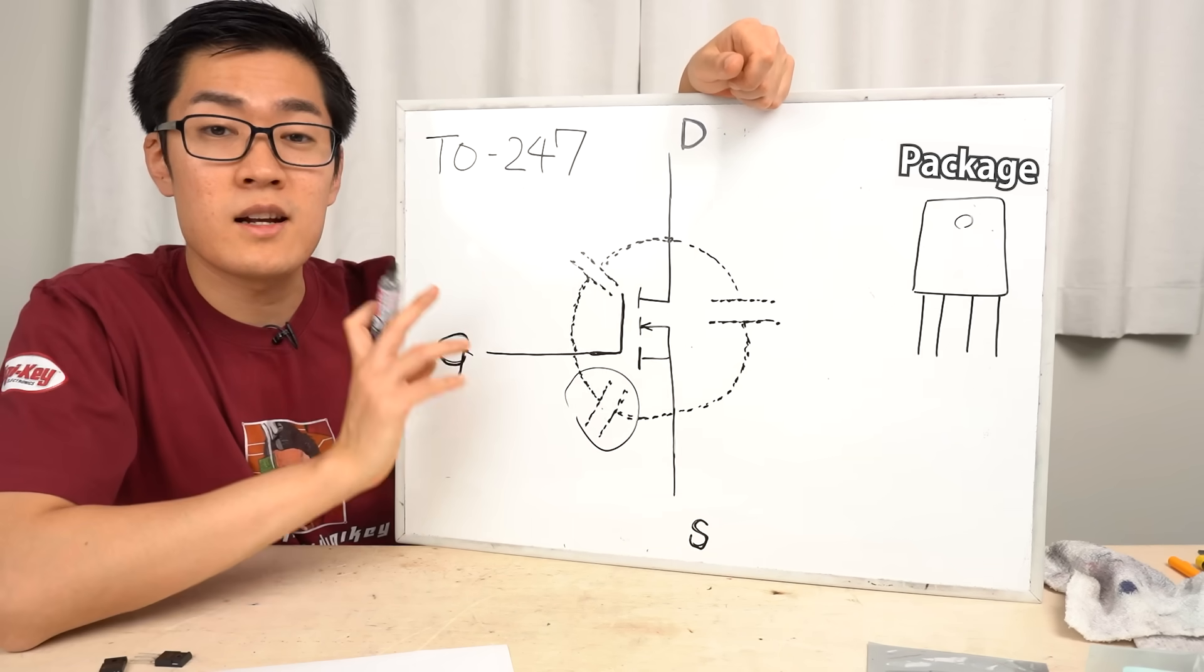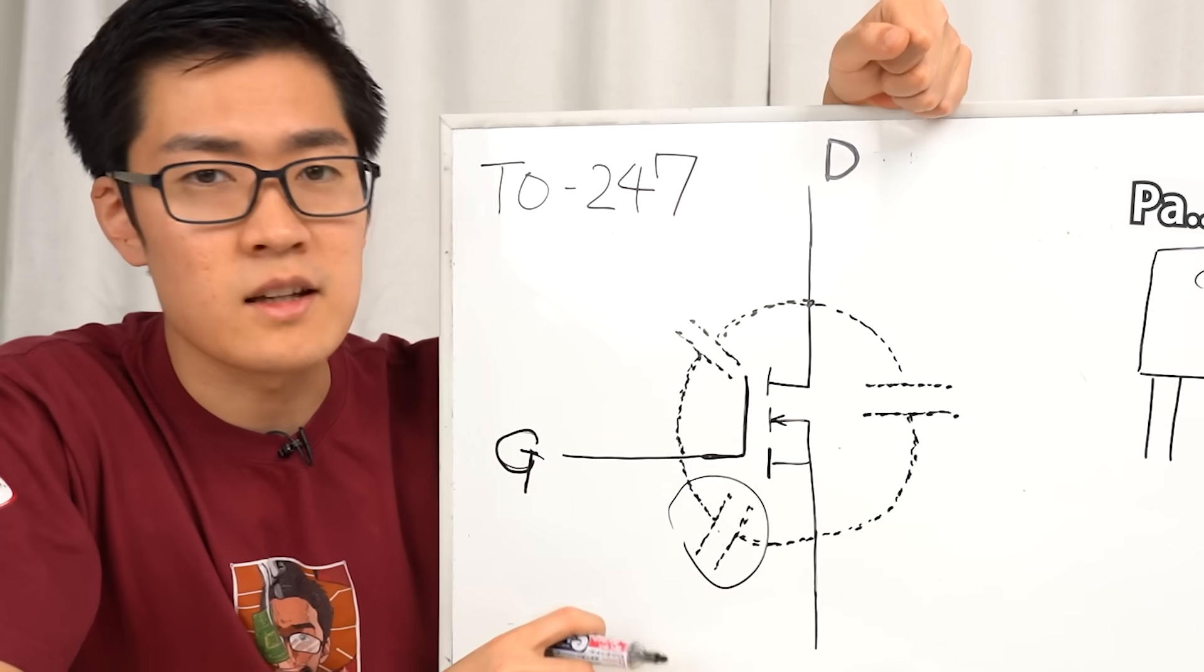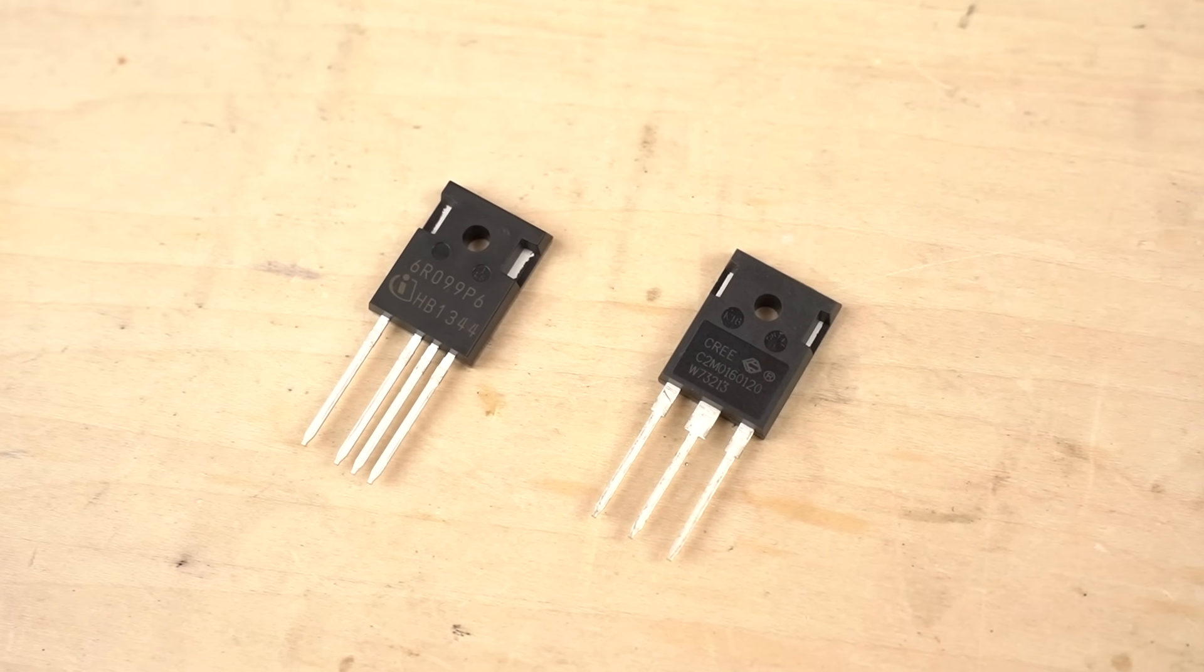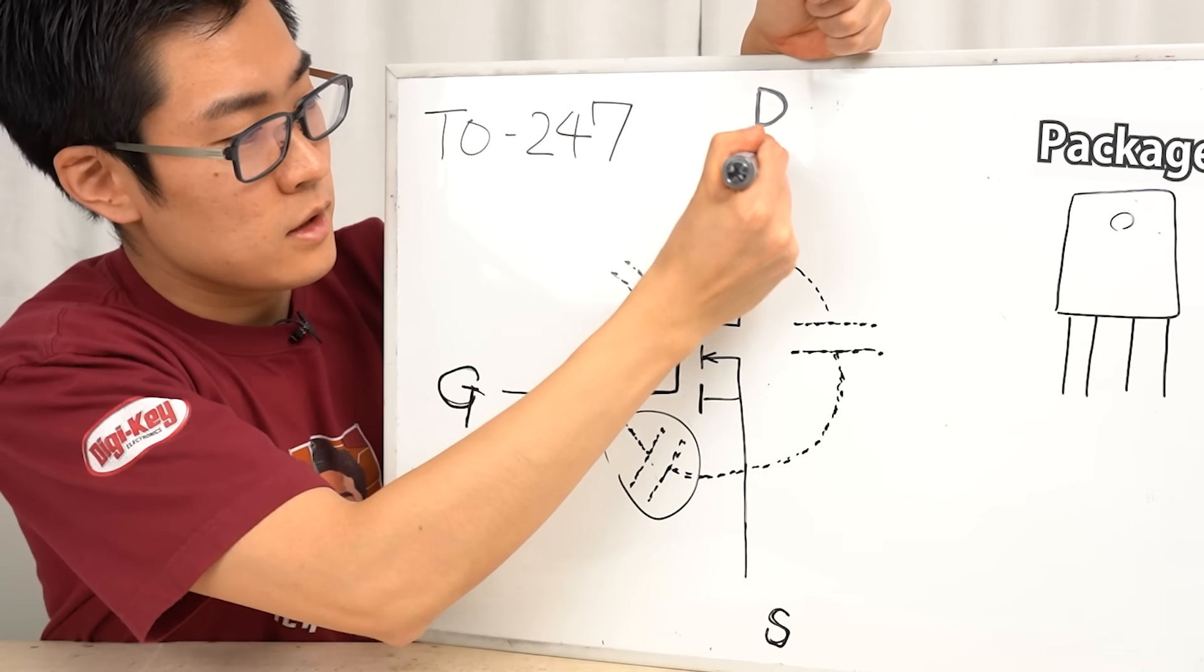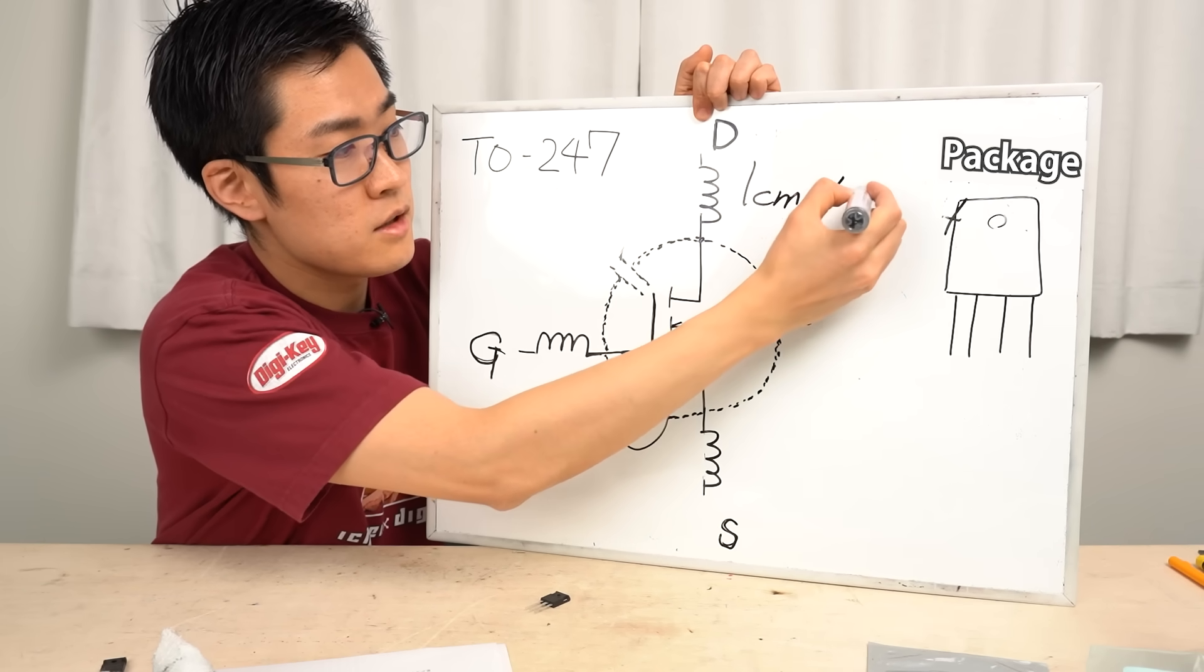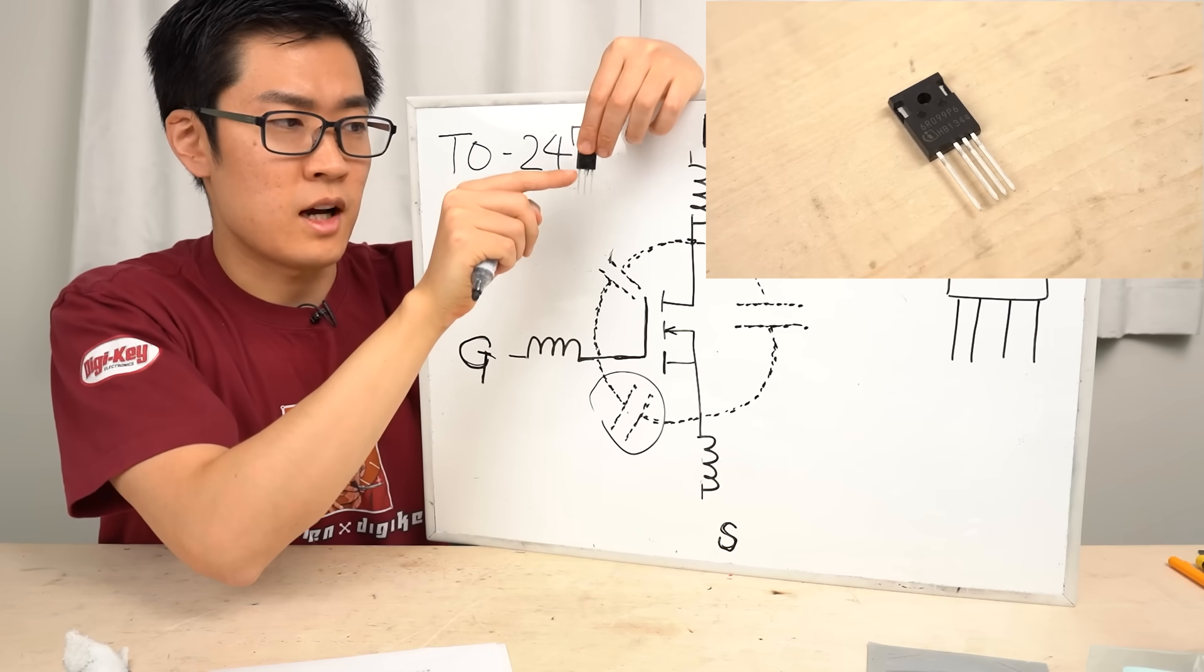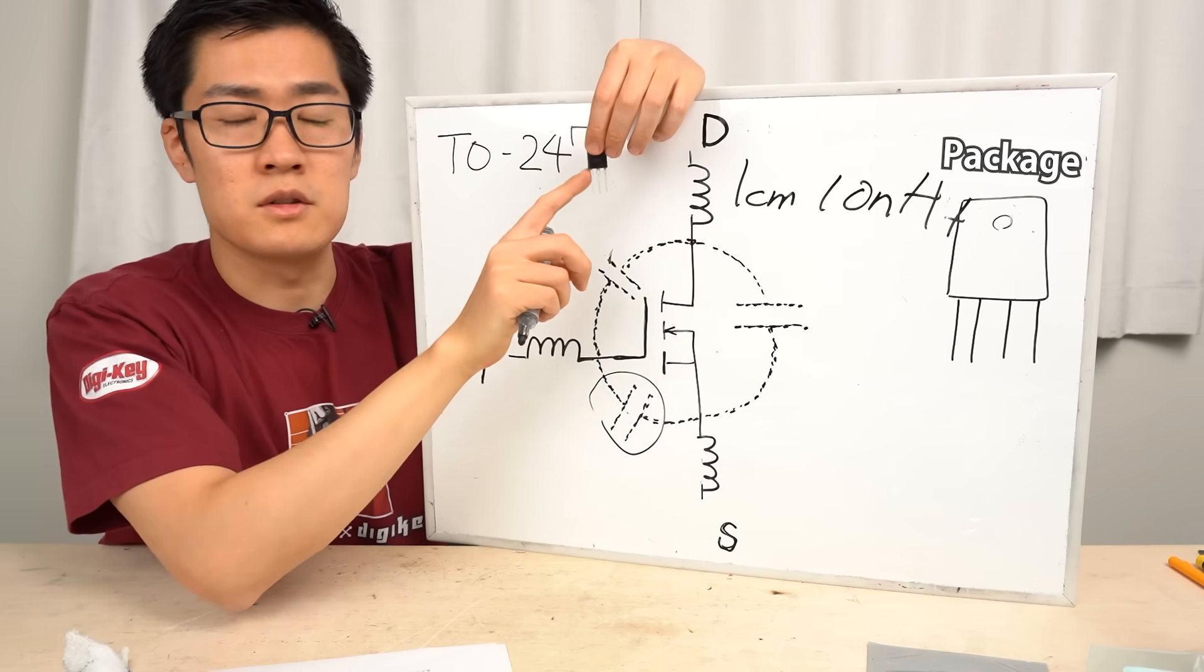In addition to parasitic capacitance, there are other components that need to be considered. One of them is parasitic inductance. As you can see, these packages have leads. The wiring of the leads has some inductance. So in reality, there's inductance in this part as well as at the source lead. There is inductance at the gate lead as well. It is said that one centimeter of wiring has about 10 nanohenry of parasitic inductance. Let's have a look at the package of this power semiconductor. The length of the leads is approximately 2 centimeters. Therefore, if we pass a current here, it will have a parasitic inductance of about 20 nanohenry.